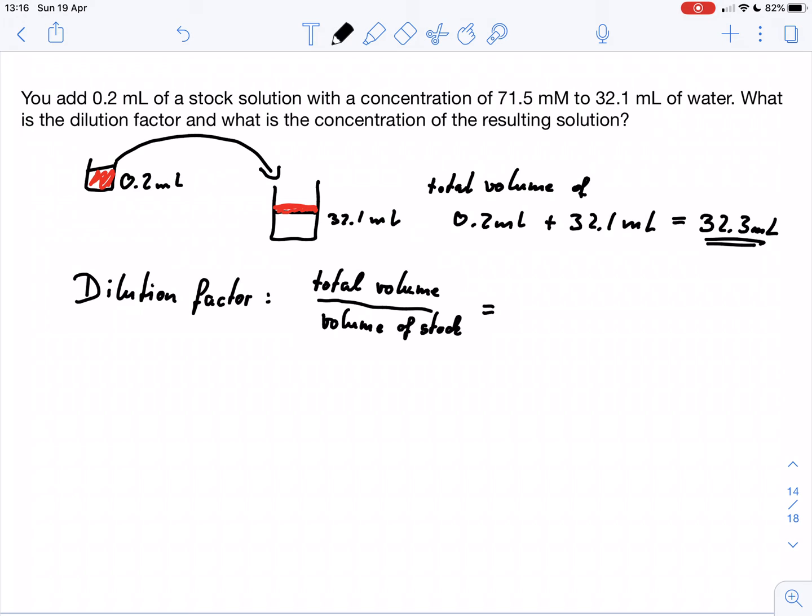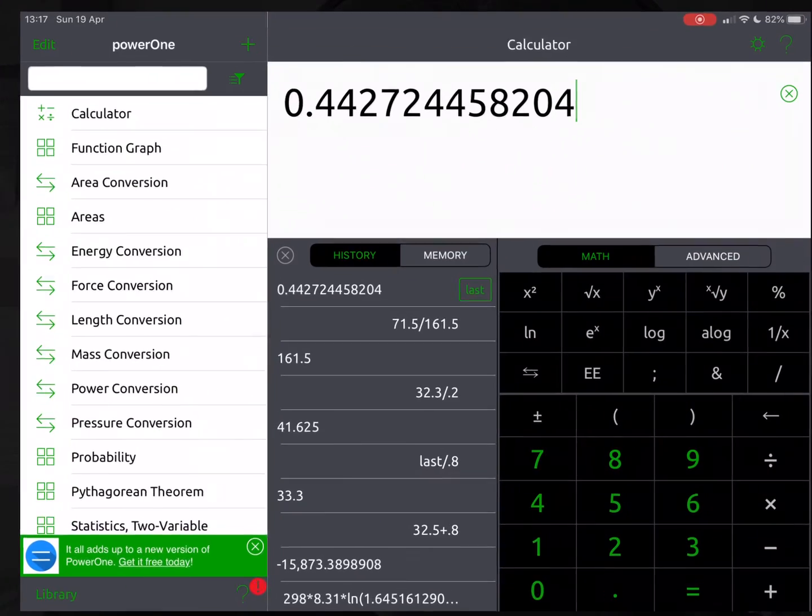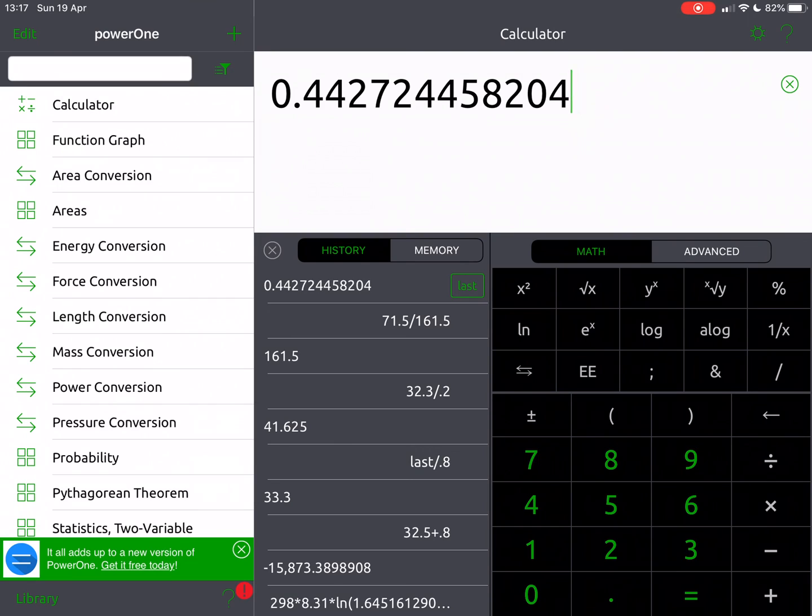And in this case, if we put in our numbers here, we would have 32.3 milliliter divided by 0.2 milliliter. Let's just get the calculator out. 32.3 divided by 0.2 gives us 161.5.